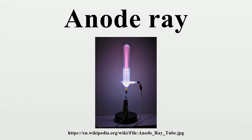By the time they reach the cathode, the ions have been accelerated to a sufficient speed such that when they collide with other atoms or molecules in the gas, they excite the species to a higher energy level. In returning to their former energy levels, these atoms or molecules release the energy that they had gained. That energy gets emitted as light. This light-producing process, called fluorescence, causes a glow in the region where the ions emerge from the cathode.